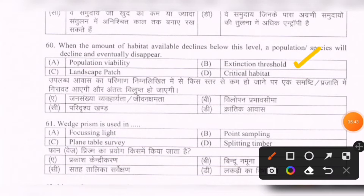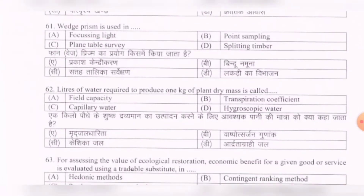Next question: A wedge prism is used in — options are: focusing light, point sampling, plane table survey, splitting timber. The correct option is B — point sampling.